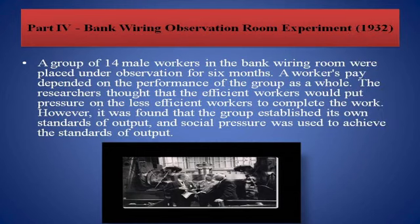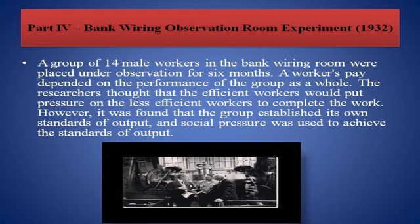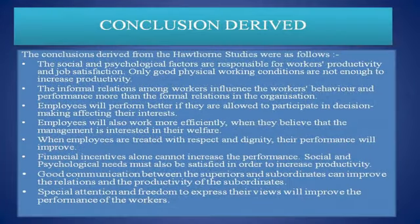In the fourth part of the experiment, also known as the Bank Wiring Observation Room experiment, it lasted for almost six months. A group of 14 male workers in the bank wiring room were placed under observation for six months. A worker's pay depended on the performance of the whole group. The researchers thought that efficient workers would put pressure on less efficient workers to complete the work, and therefore they made a group consisting of efficient, less efficient, and average workers together. However, it was found that the group established its own norms, its own standard of output, and social pressure was used to achieve those standards.